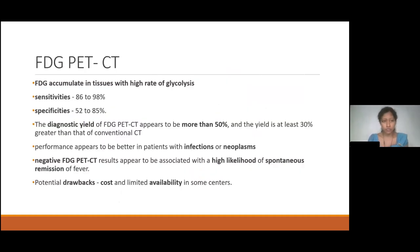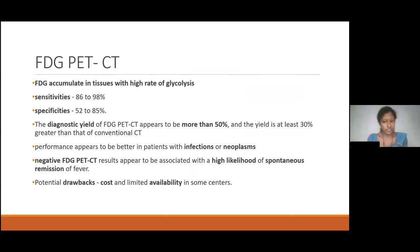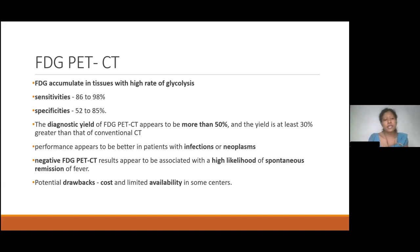FDG PET-CT uses fluorodeoxyglucose, which is taken up by cells with high glycolysis — like malignancies — and by activated lymphocytes in acute or chronic infection. It is important for diagnosing infections and neoplasms, with sensitivity of 86–98% and specificity of 52–85%. The diagnostic yield is at least 30% greater than conventional CT. A negative FDG PET-CT indicates a high likelihood of spontaneous remission of fever. The main problems are cost and limited availability in some centers.